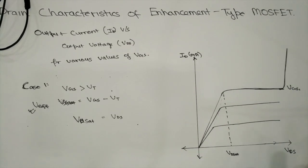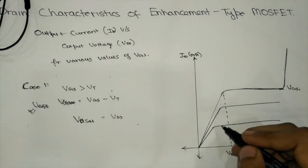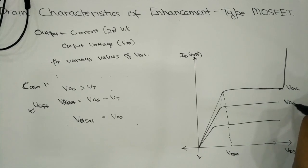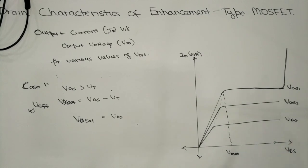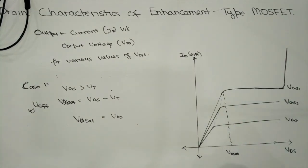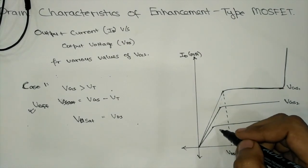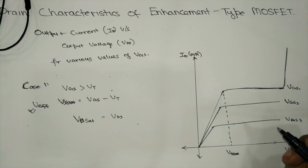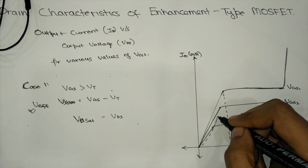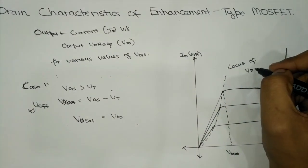The width of the N channel depends upon the VGS value. As plotted here for various values of VGS — VGS1, VGS2, and VGS3 — we see the same characteristics, but for VGS1 the drain current saturation is the maximum. Therefore, VGS1 is greater than VGS2, which is greater than VGS3. The locus of all VDSAT points for various values of VGS is known as the locus of VDSat.